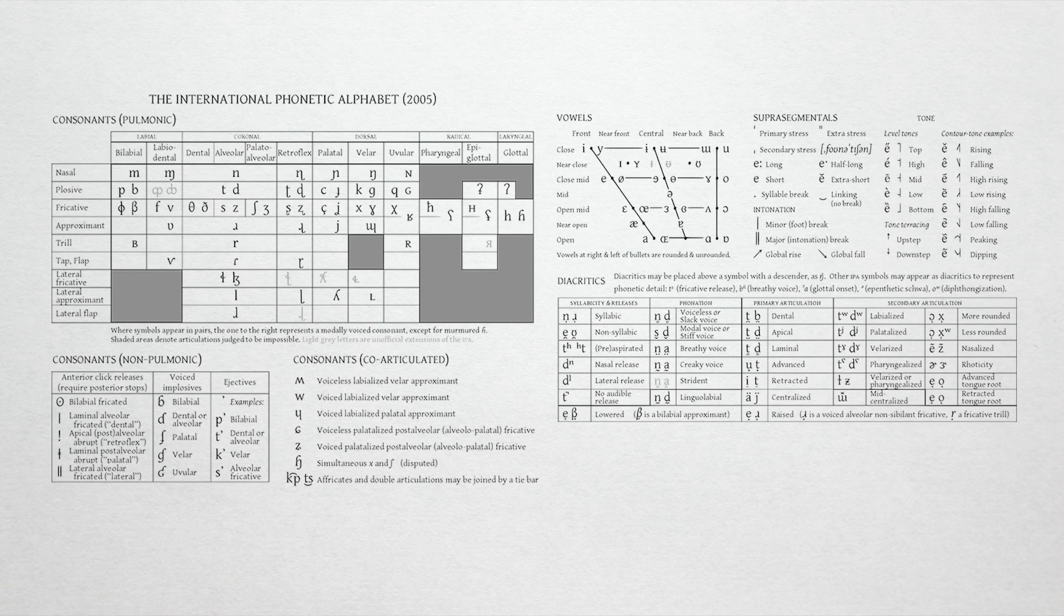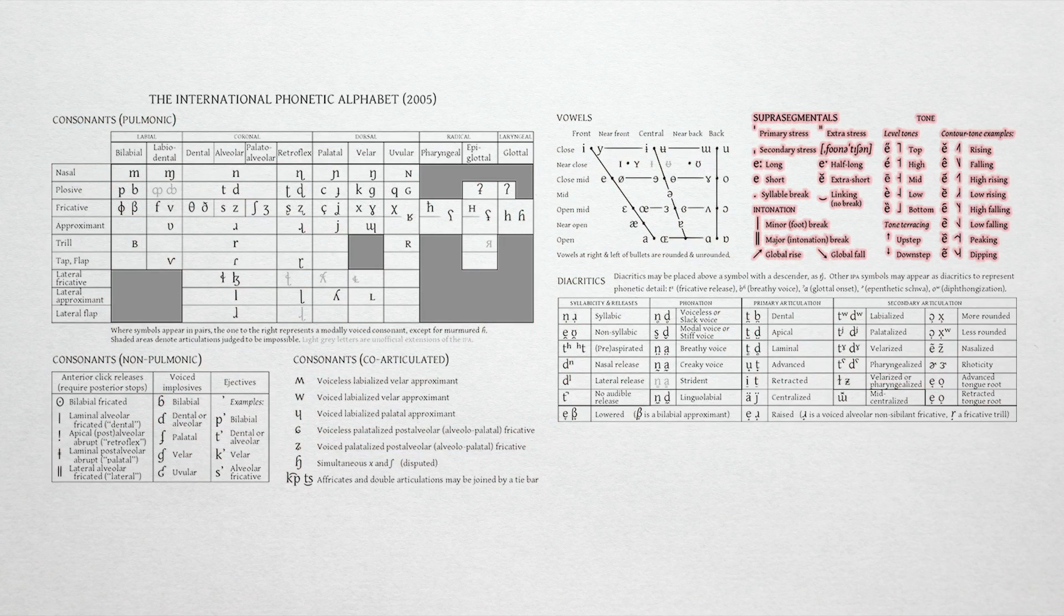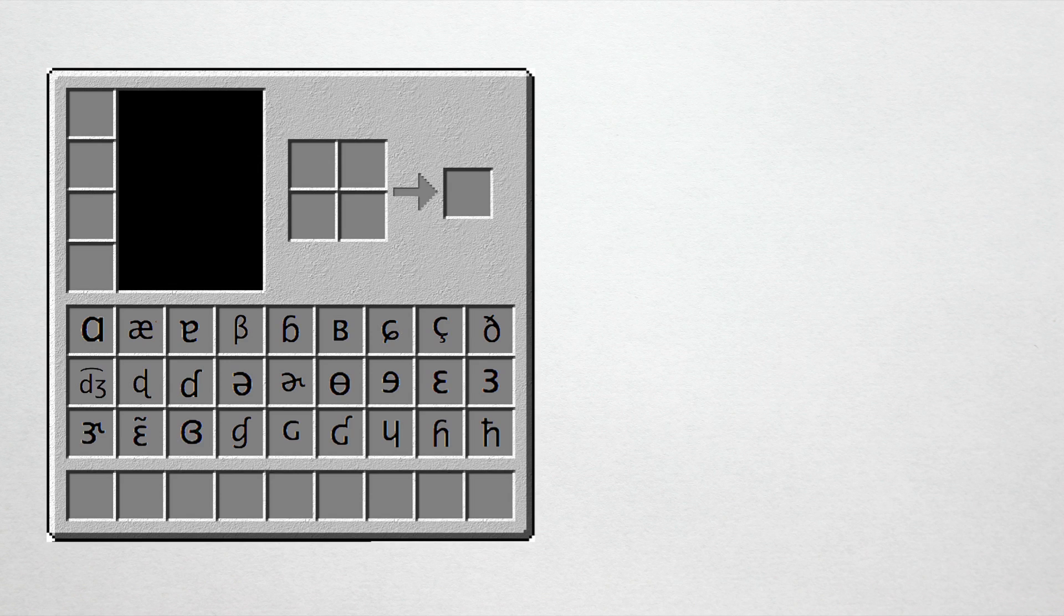Anyways, back to the IPA chart. Consonants are here, vowels are here, diacritics or sound modifiers are here, suprasegmentals like length, stress, intonation and rhythm indicators go here. Good conlangers will select a set of sounds from this chart to use in their language, a phonemic inventory if you will.